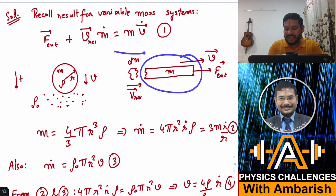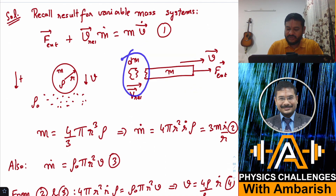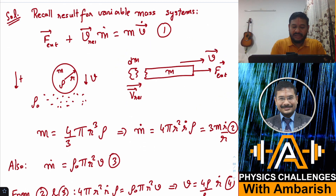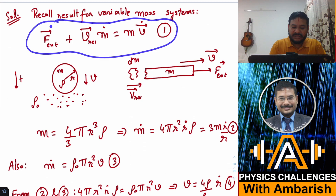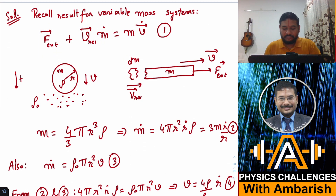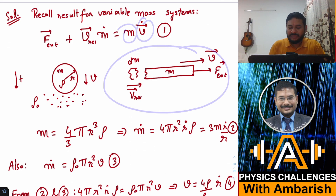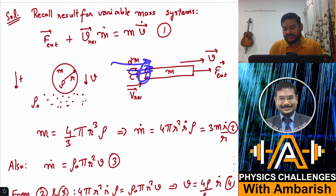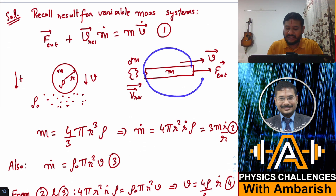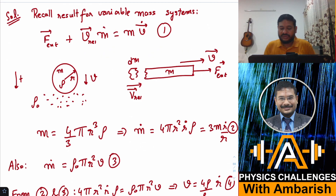Let's say you have a mass m, and some dm mass is getting attached to it in time dt. The velocity of dm relative to m is V_rel, and at the same time it's being pulled by some external force. The governing equation for this variable mass system is: F_external + V_rel × (dm/dt) = m × acceleration. When the incoming mass attaches, it provides a thrust force, contributing to the acceleration. This is the standard equation for variable mass systems.